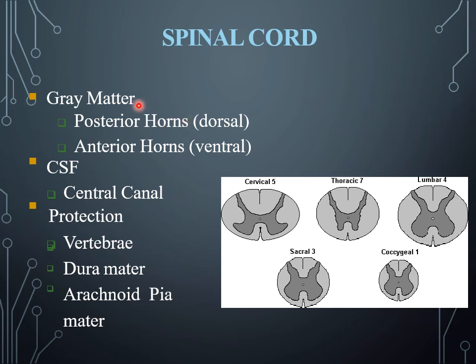The spinal cord has two regions: the gray matter, which consists of the posterior horn (dorsal) and anterior horn (ventral), and the central canal containing cerebrospinal fluid. It is protected by the vertebra, dura mater, and arachnoid mater. It contains different cervical, thoracic, and lumbar regions — for example cervical 5, thoracic 7, lumbar 4, and sacral 3.